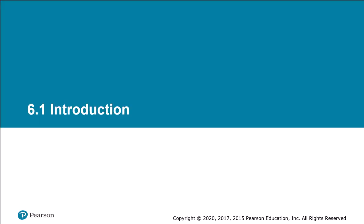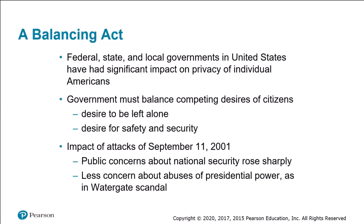We'll start with an introduction by way of section 6.1. This chapter six considers the impact that federal, state, and local governments in the United States have had on the information privacy of those living in the United States in particular.